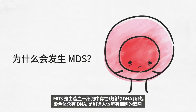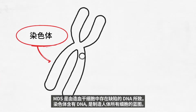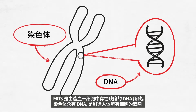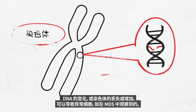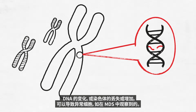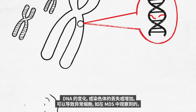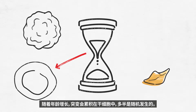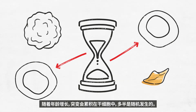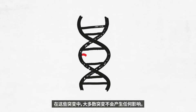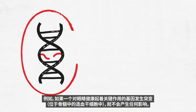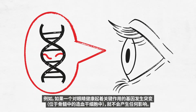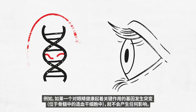Why does MDS happen? MDS is a result of faulty DNA in blood stem cells. Chromosomes contain DNA — the blueprint for making all cells in the body. Changes in the DNA, or loss or gain of chromosomes, can cause the abnormal cells seen in MDS. With aging, mutations accumulate in stem cells, mostly by random chance. Most of these mutations are of no consequence — for example, if a mutation in a gene important for eye health occurs in a blood stem cell in the bone marrow, nothing will happen.